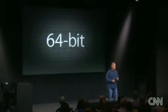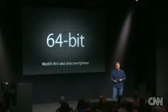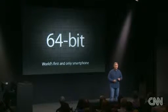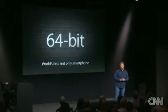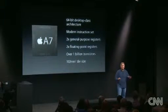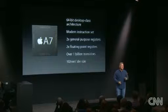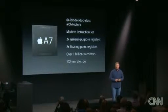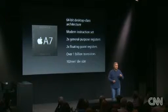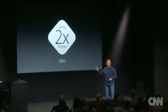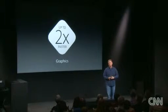A7 is 64-bit — the first ever in a phone of any kind. I don't think the other guys have been talking about it yet. This is remarkable. It is a 64-bit desktop-class architecture, which means we can use a new modern instruction set, an ARM instruction set that's more efficient than the others use. The A7 is up to twice as fast as the previous generation system at CPU tasks, and it's up to twice as fast at graphics tasks as well.